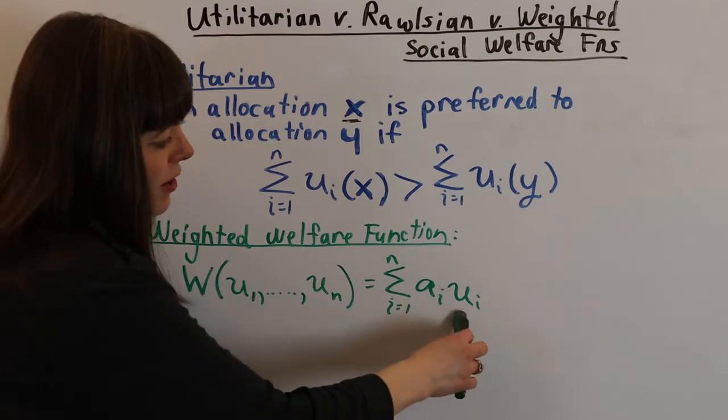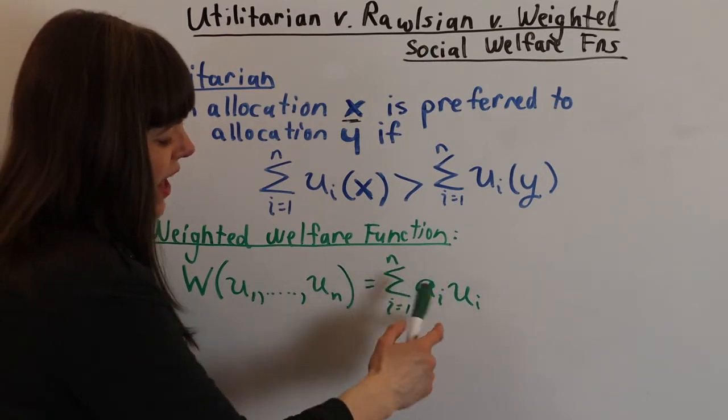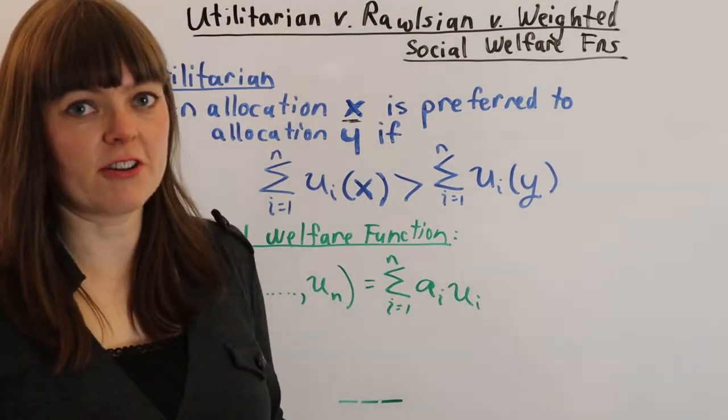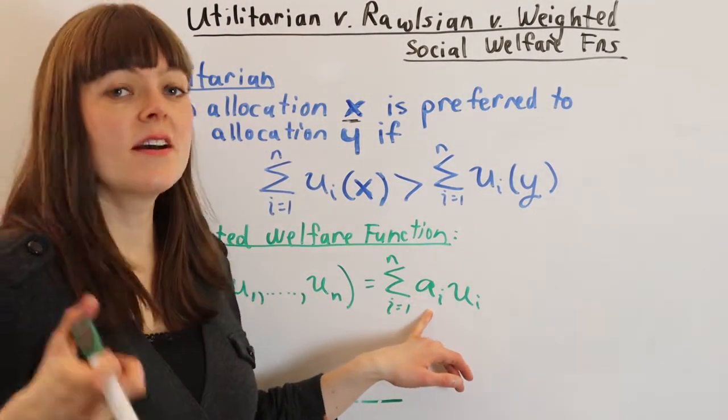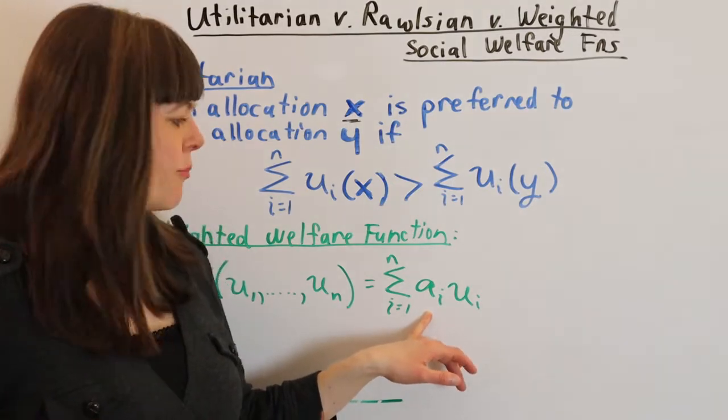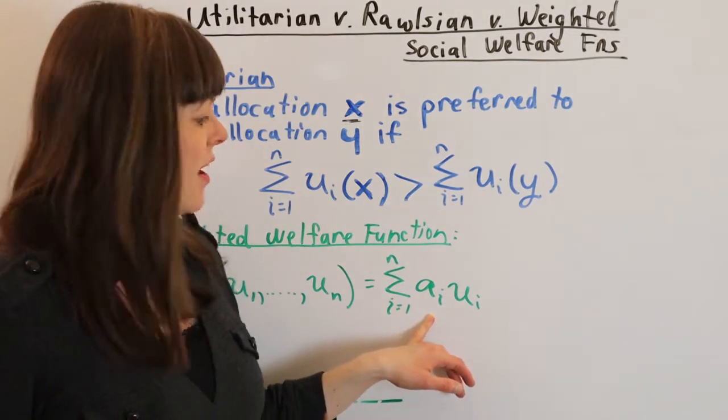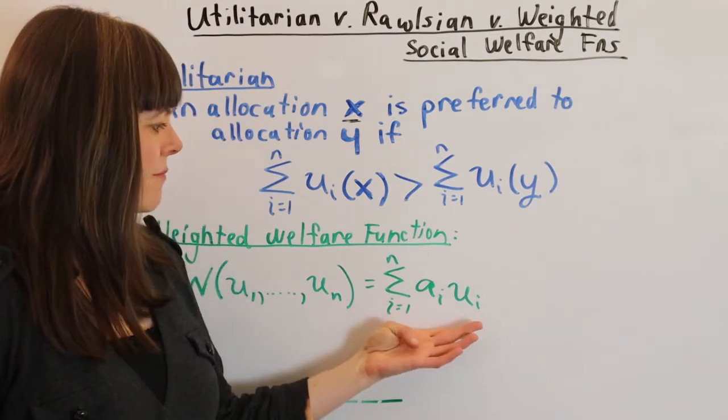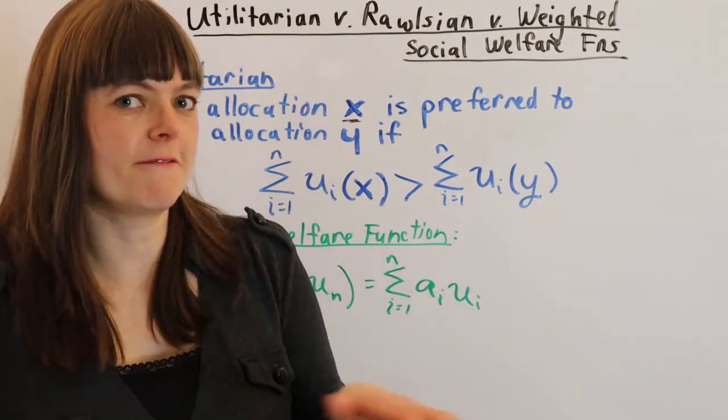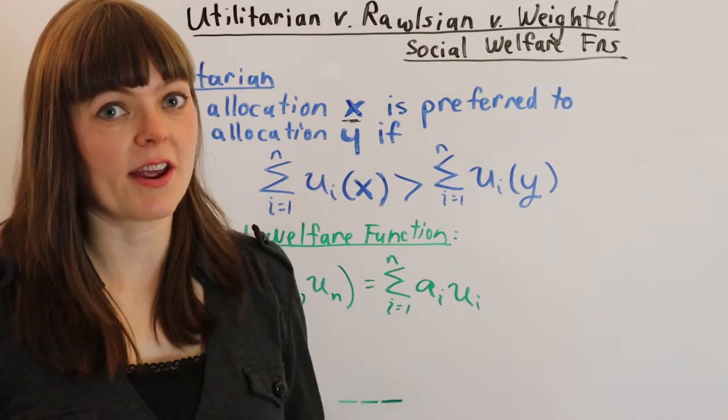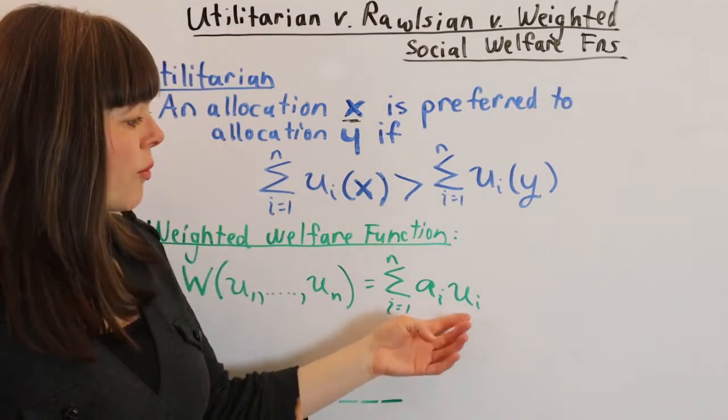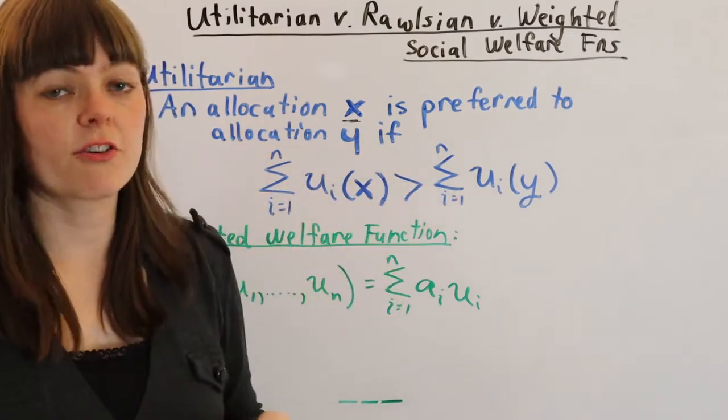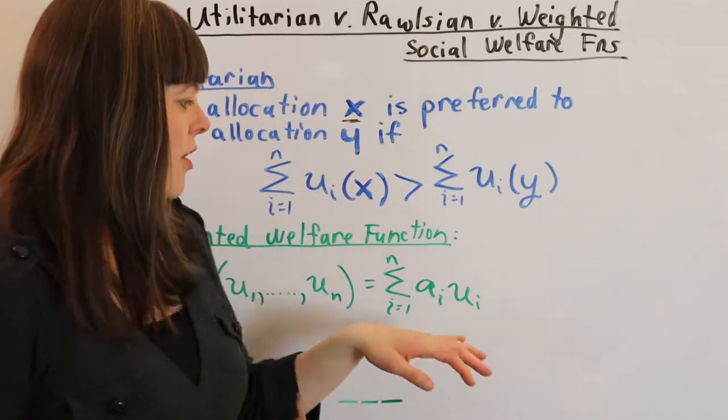We're summing all of their utilities except we have this a_i, this weight. We could weight this really unfairly and put a really heavy importance weight on Talia's utility, a medium importance weight on George's utility, and a low importance weight on Mary's utility. If we did that, of course the allocation we end up with is going to favor Talia and give Mary a bad end of the deal. Or we can have weights that are trying to make things a little bit more equitable. For example, we could put the highest utility weight on the person who has the least.